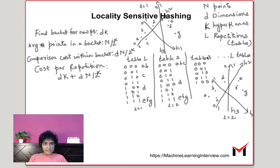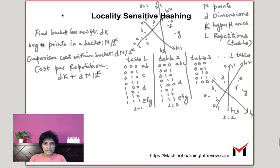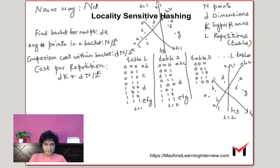Why is this more efficient? In the naive way, suppose we have N data points each with D dimensions. To find a nearest neighbor naively, we look at all N points and compute a dot product for each, resulting in N times D computations. With locality-sensitive hashing, the first thing we do is find the hash or bucket for the new point. The complexity of this is D times K because there are K hyperplanes and we need to do a dot product with each.